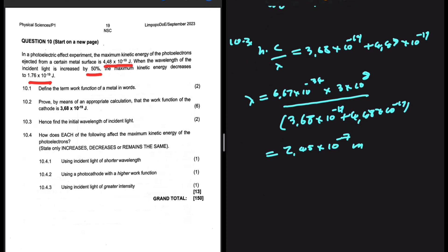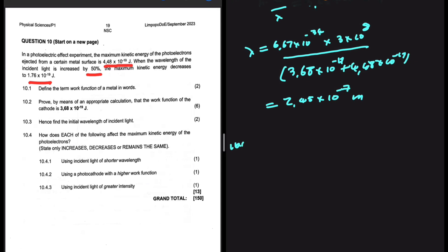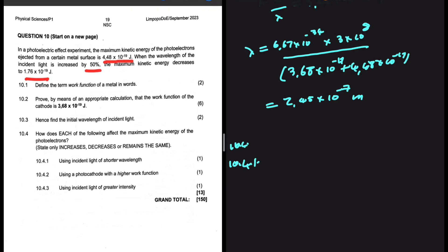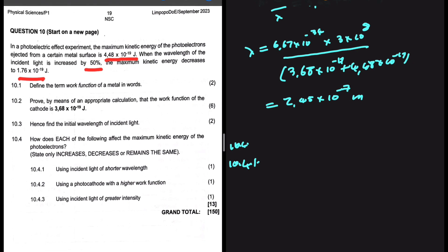That is 10.3. Let's answer some conceptual questions — 10.4 and 10.4.1. How does each of the following affect the maximum kinetic energy of the photoelectrons? State only increases, decreases, or remains the same. For 10.4.1: using incident light of a shorter wavelength. A shorter wavelength increases the frequency, and if the frequency increases, EK max increases. So the answer to 10.4.1 is increases.